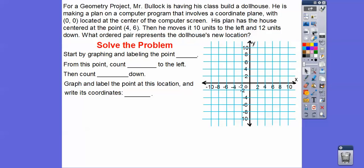So let's get started here. We'll start by graphing the labeled point of (4, 6) right there. So let's go ahead and graph that. There's (4, 6) right there. These are going by 2. So here's 2, here's 4. Here's 2, 4, 6 right there. So there's the dollhouse's starting location right there.